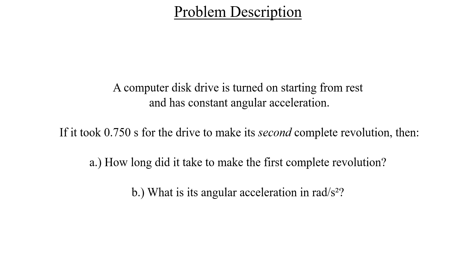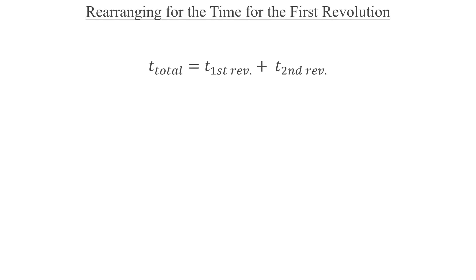It's a pretty straightforward problem and doesn't really require a picture, so let's just jump straight into it. The first thing we need to consider is the total time that it takes for both revolutions. And here you can see it's just the sum of the individual times. Okay, that's pretty simple.